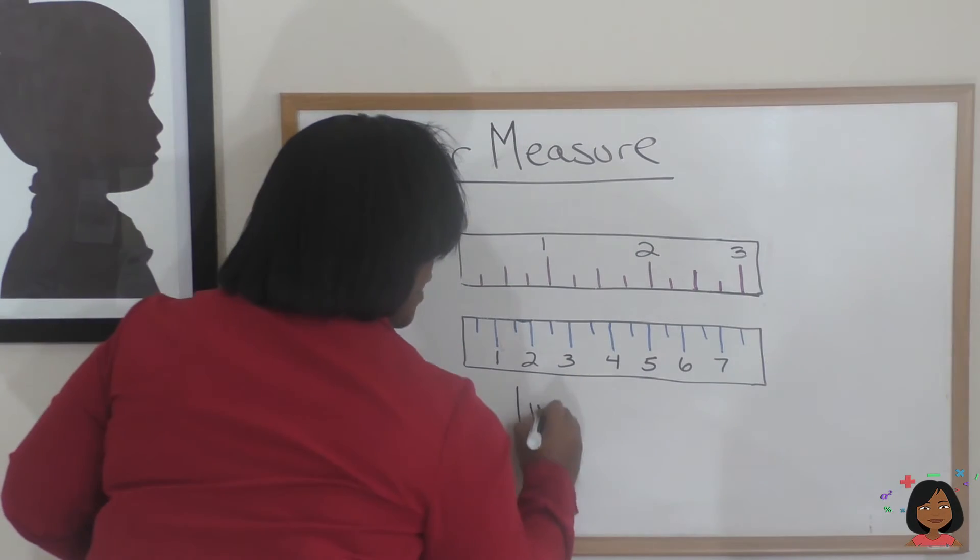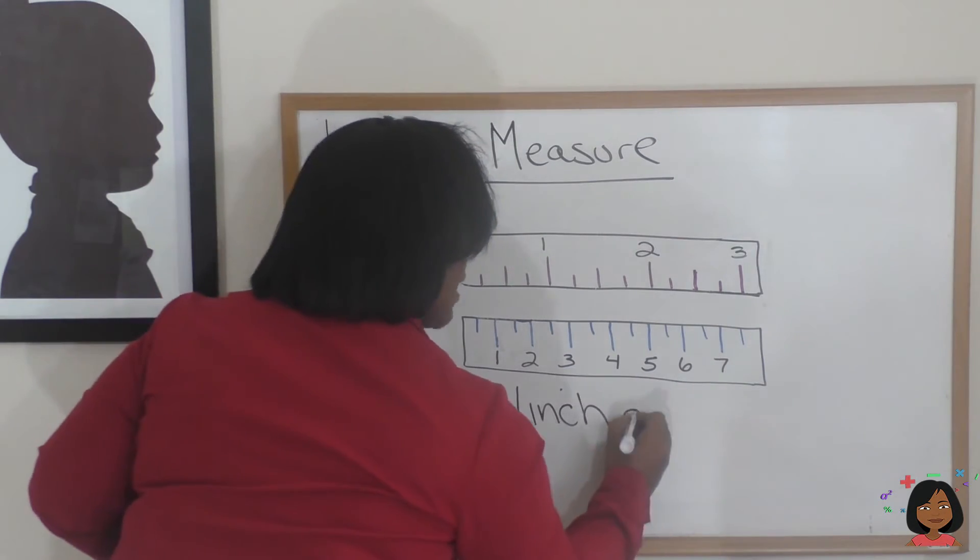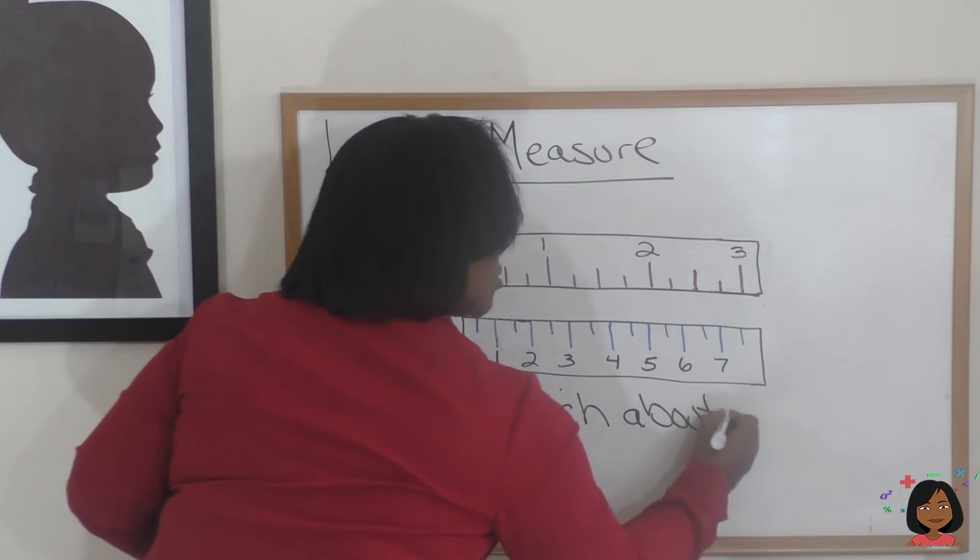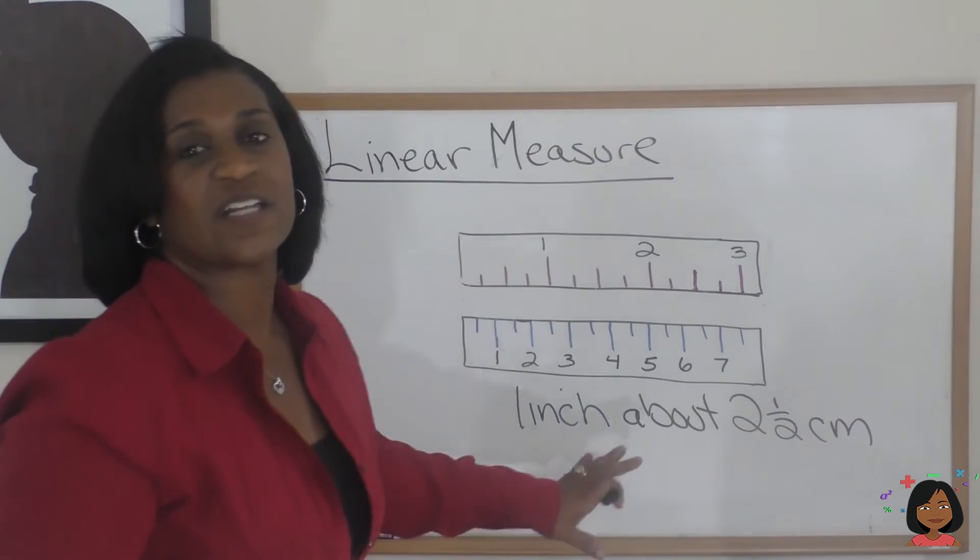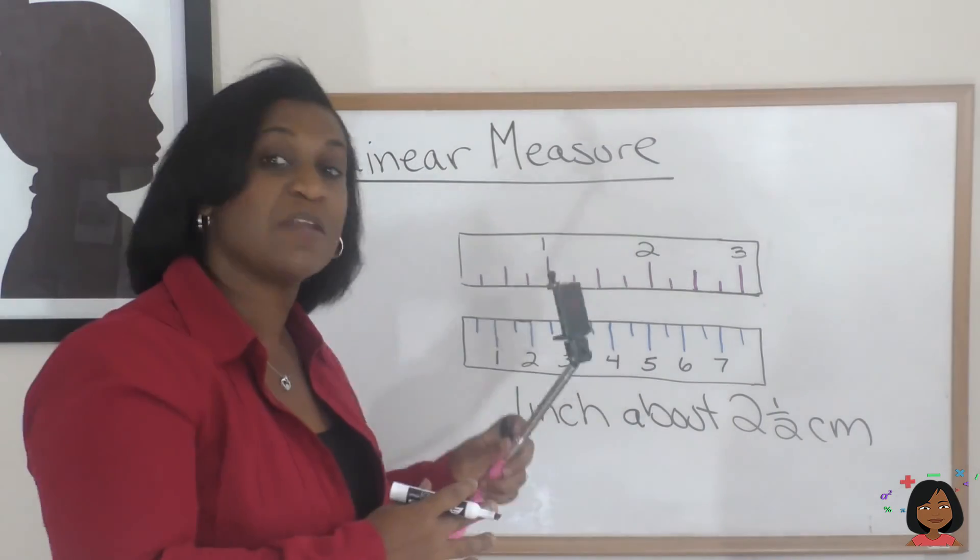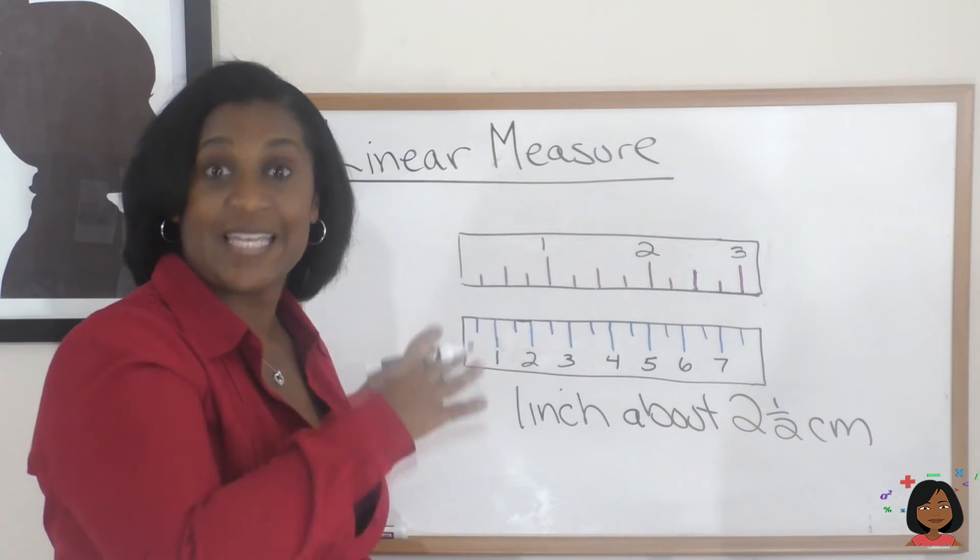I'll write that down for you. One inch is about two and a half centimeters. So you're always going to, the same thing will always measure many more centimeters than it does in inches.